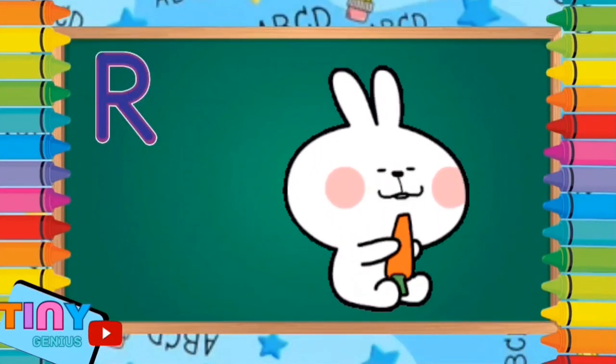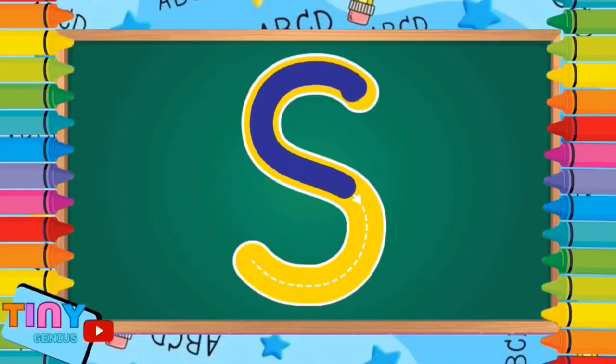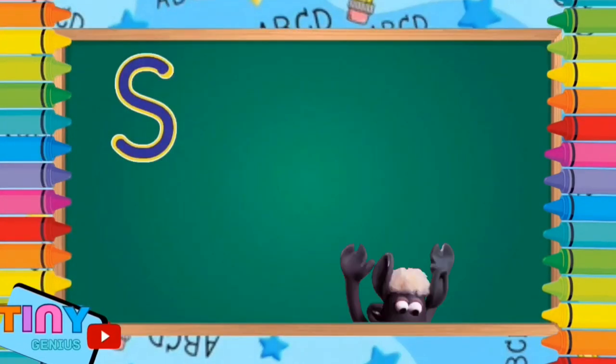Time for the next one, the letter S. Pull back and around down and back around. S is for sheep.